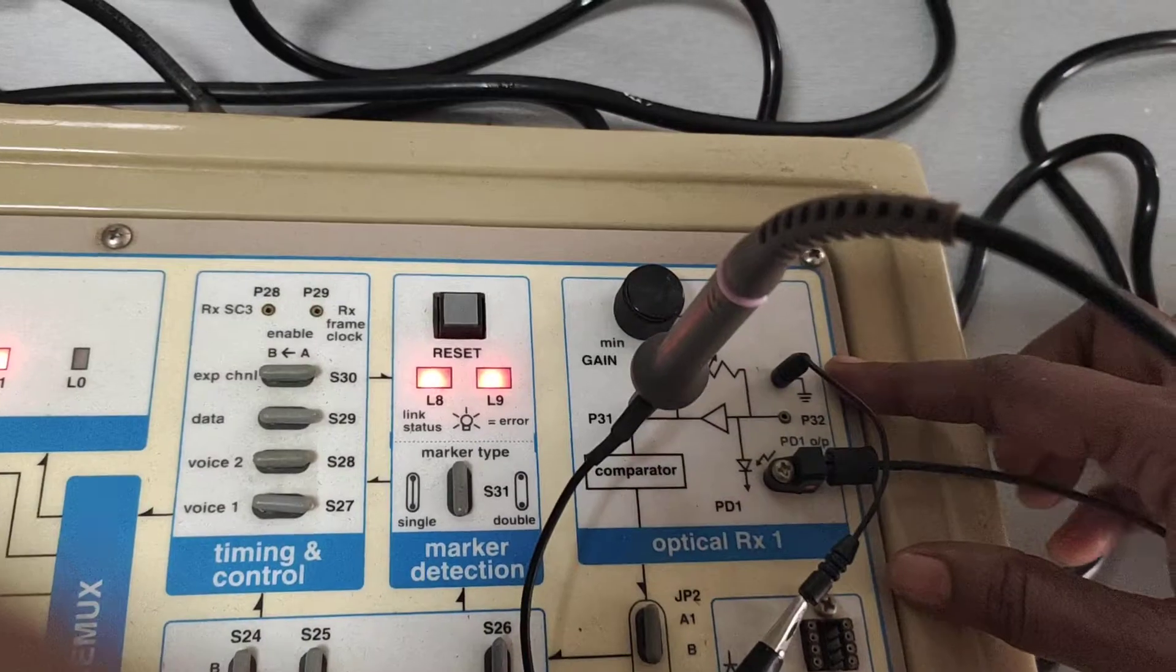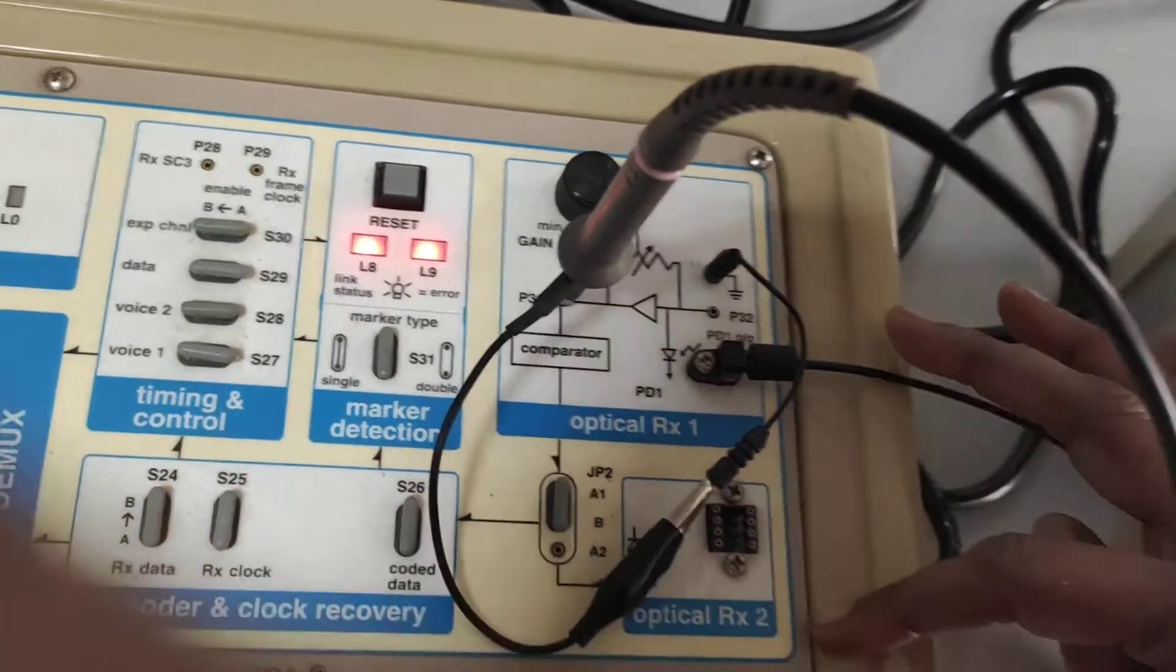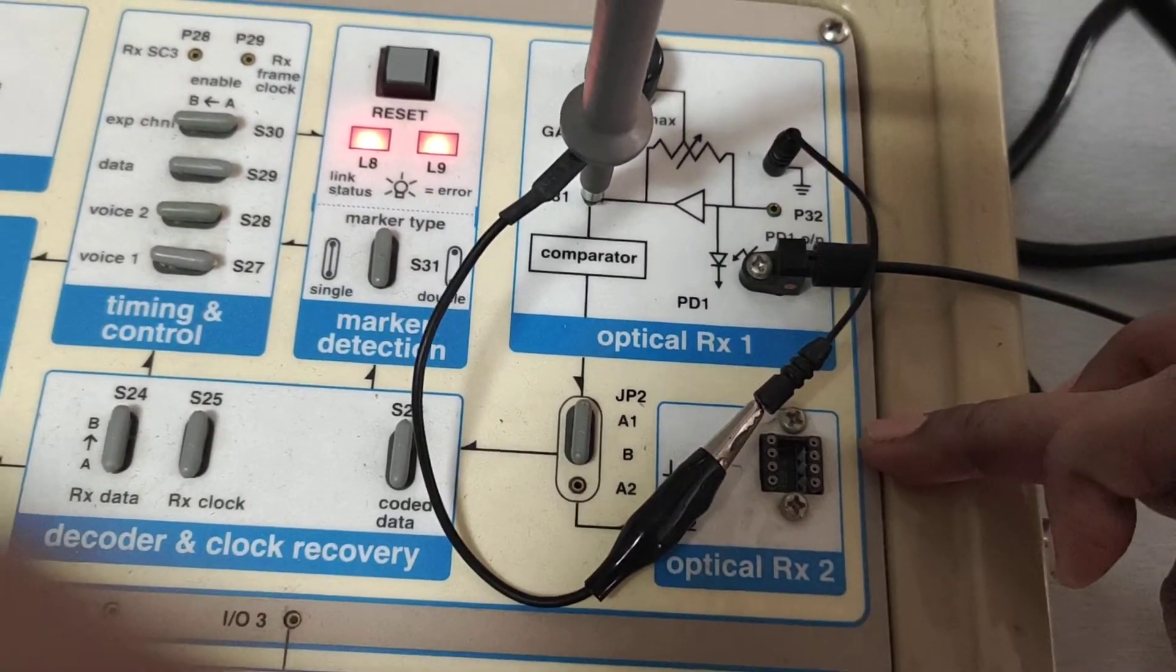Here you see, this is the photodetector. There are two Receiver Parts: Receiver 1 and Receiver 2.